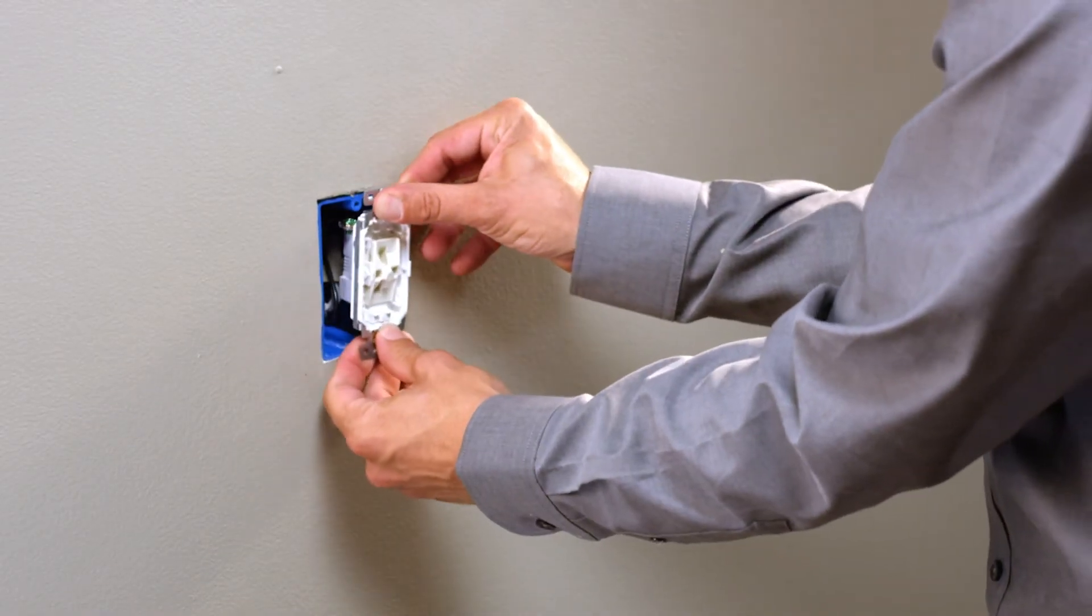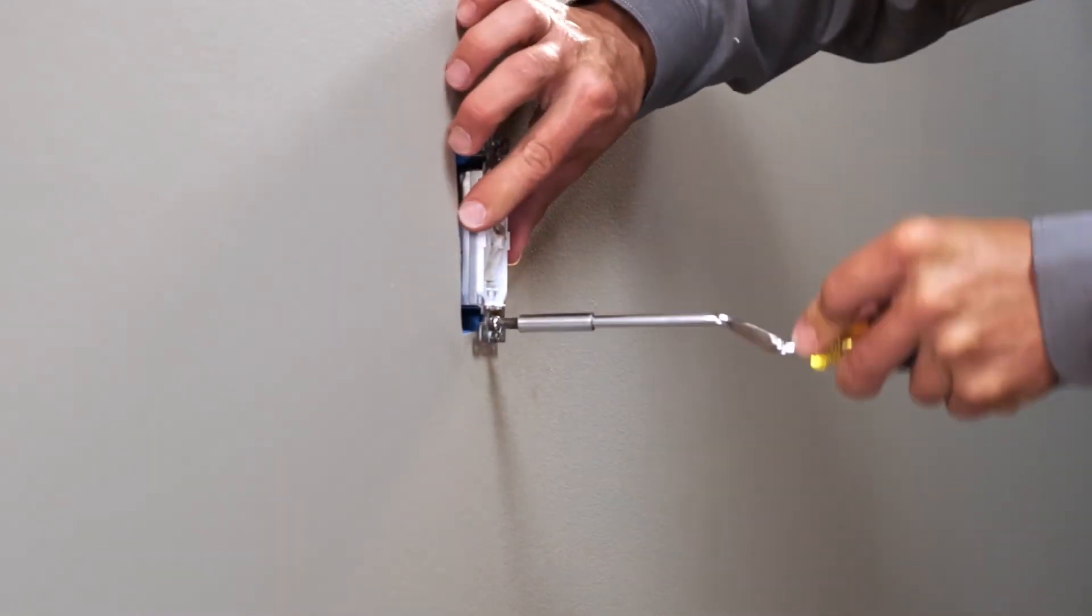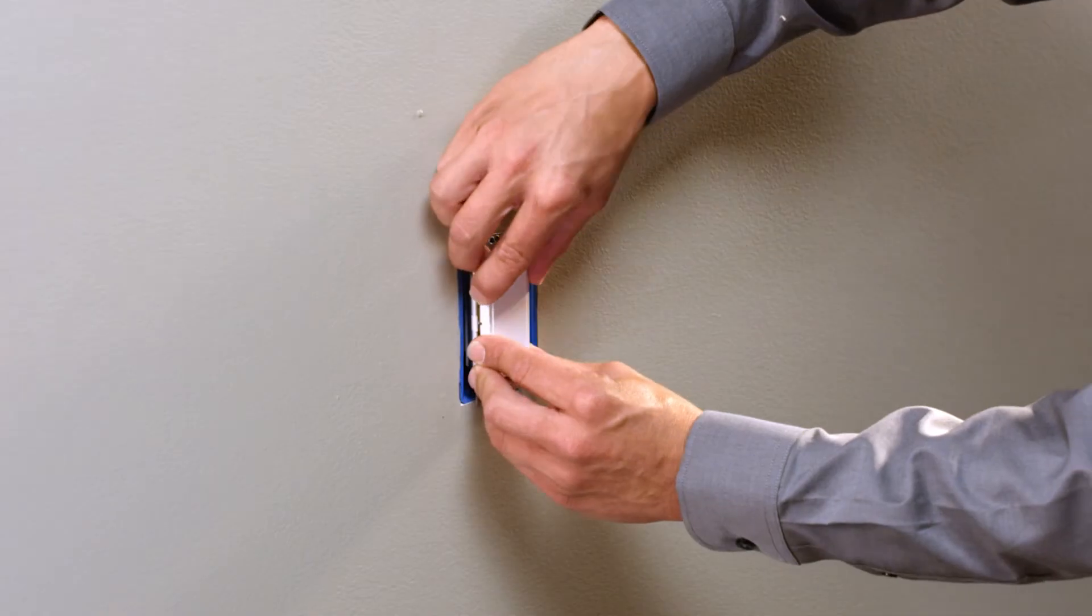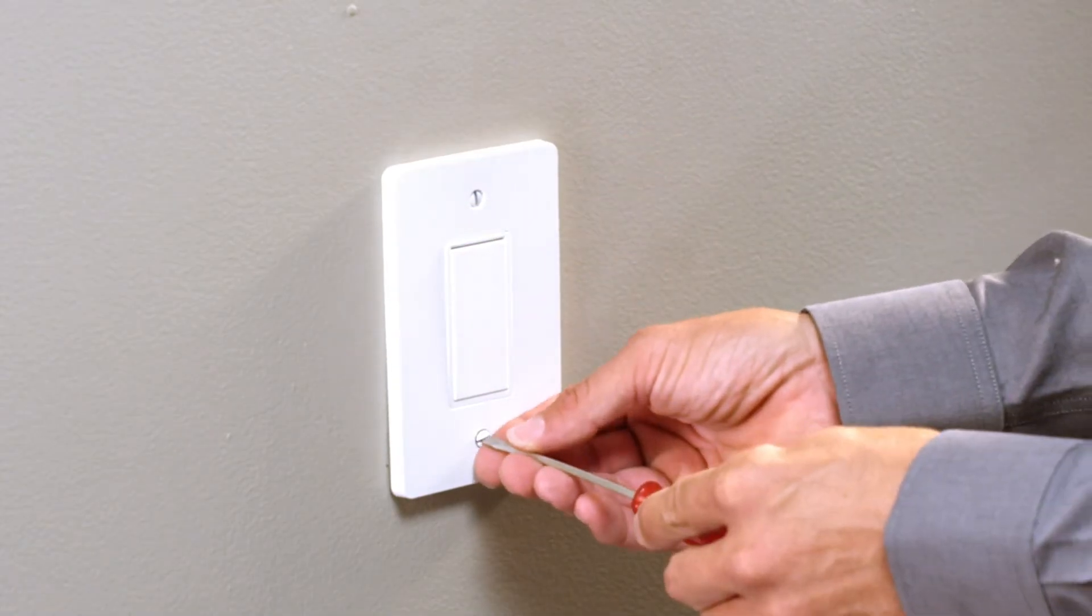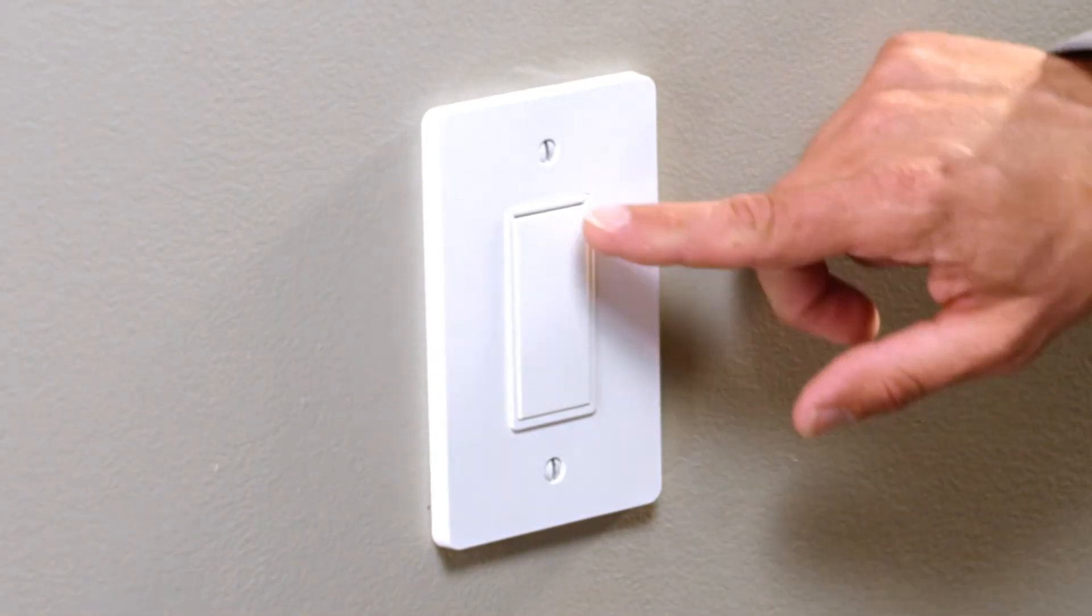Once your wiring is complete, you can mount your device by simply tightening the screws. Then, install a Square D X-Series rocker plate and wall plate. Restore power and test.